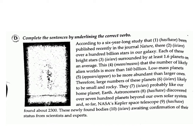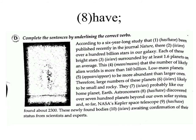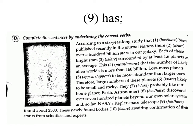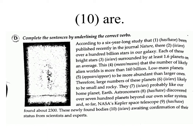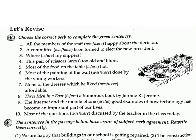Astronomers (8) has/have discovered over 700 planets beyond our own solar system and, so far, NASA's Kepler space telescope (9) has/have found about 2,300. These newly found bodies (10) is/are awaiting confirmation of their status from scientists and experts. Answer: have. Answer: has. Answer: are.